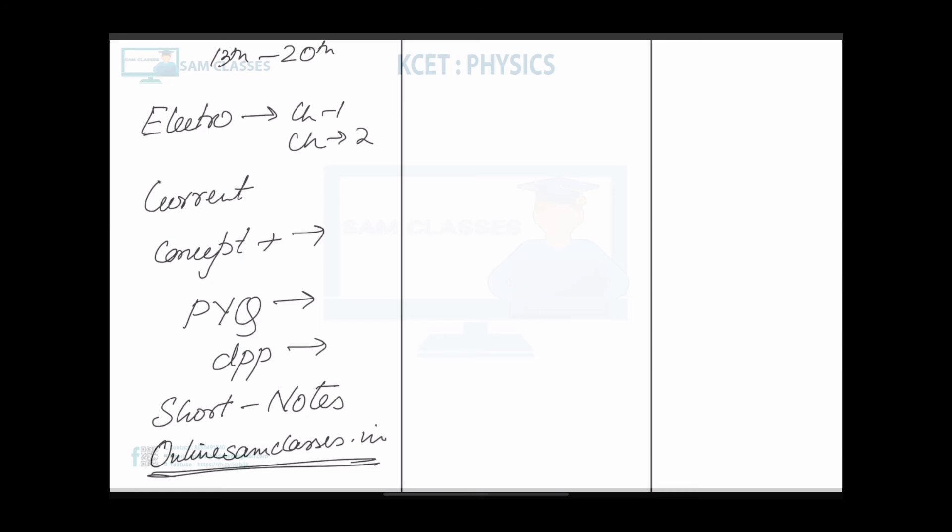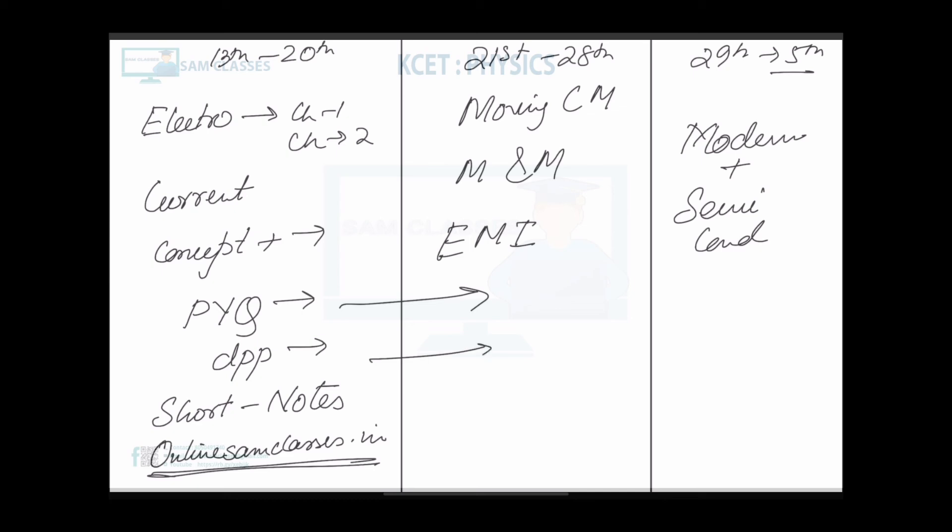Second week, around 21st to 28th, we'll cover Moving Charges and Magnetism (MCM), Magnetism and Matter (MM), and EMI. Third week from 29th to 5th will be Modern Physics and Semiconductors. Same thing - we'll provide PYQ, DPP, and concept part with formulas. Everything will be given, so you have to work very hard.